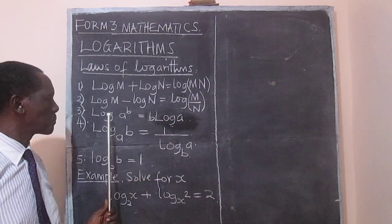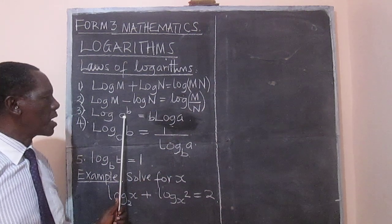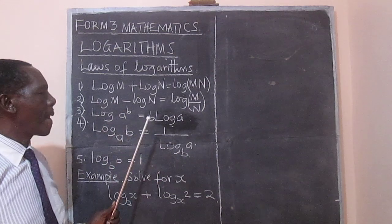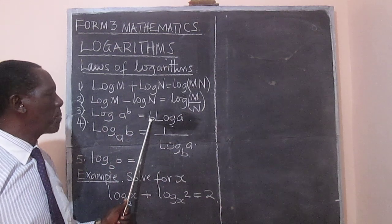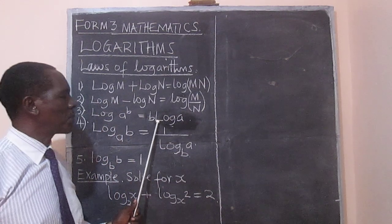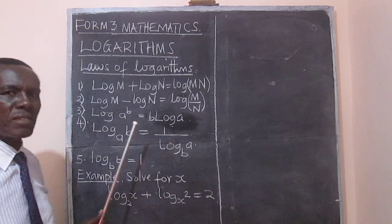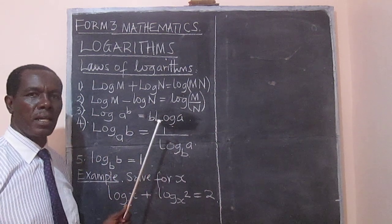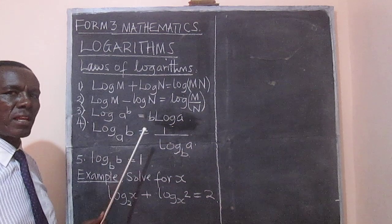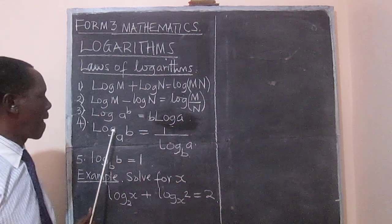Then law number 3, the logarithms of a raised to b is equal to b multiplied by the logarithms of a. That's when you are getting the logarithms of a power. It is that power multiplied by the logarithms of the base.